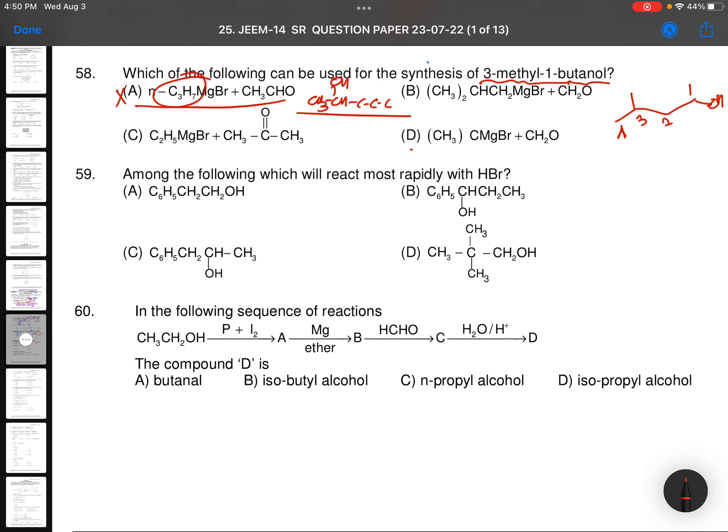We will go with this one. This will become OH and here you will be getting C2H5. So this is 2-methyl-2-butanol. No, not your choice.